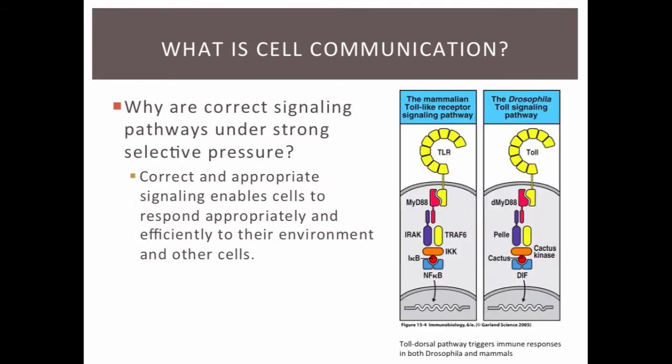Correct signaling pathways are under strong selective pressure because they enable cells to respond appropriately and efficiently to their environment and other cells. If a cell has a mutation in a gene that codes for a signaling pathway, that might cause the cell to not be able to respond to changes in the environment and the cell might die. Therefore, the cell would not be able to pass that mutation on to its offspring.